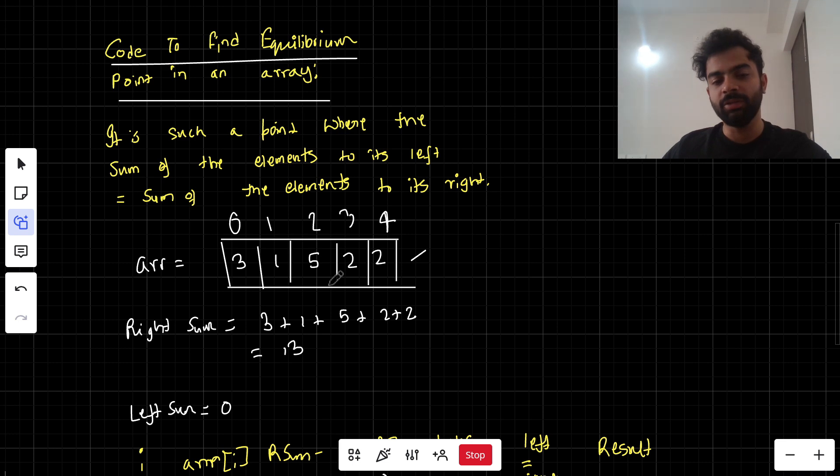3 plus 1 is 4, similarly 2 plus 2 is also 4, so the equilibrium point is this one which is 5, which is index 2.